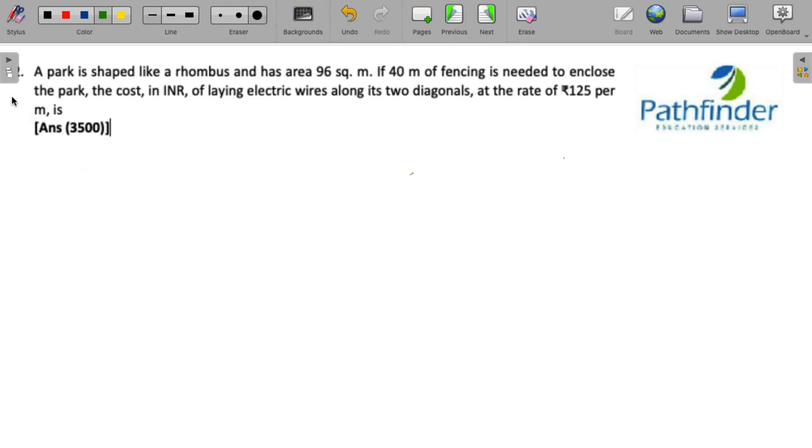This is a CAT 2021 slot three quantitative aptitude question. A park is shaped like a rhombus and has an area of 96 square meters.